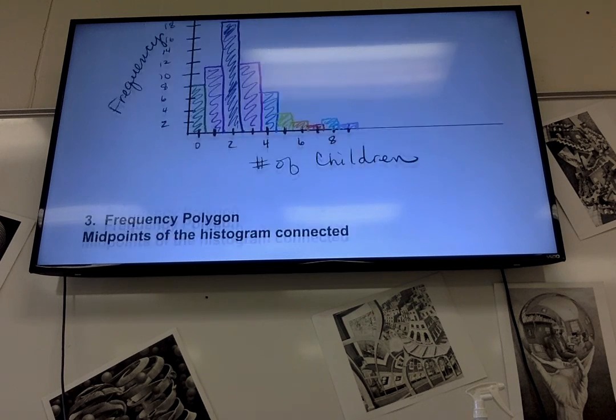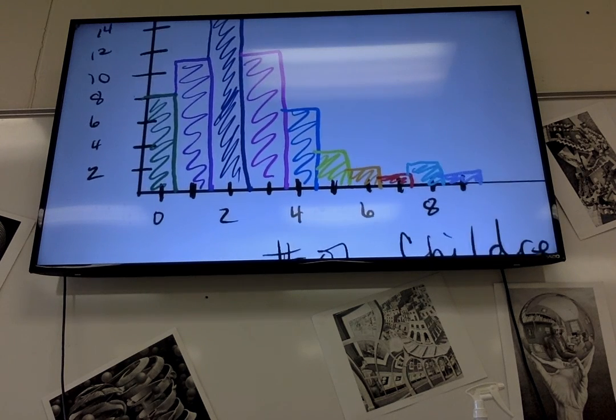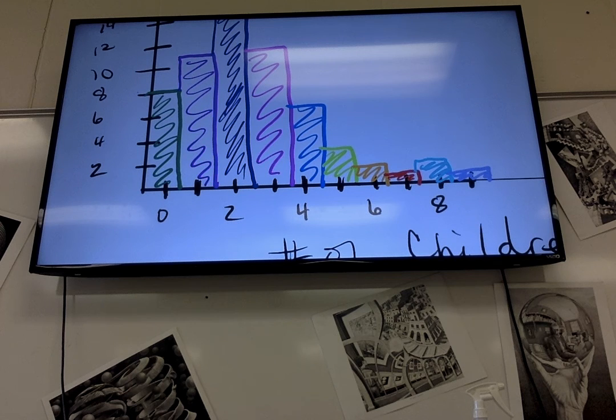Okay, so the frequency polygon you're going to have a point here and a point at the end of the box. The very bottom of the first box and the very bottom of the last box.